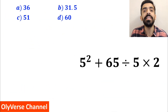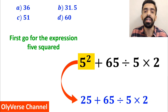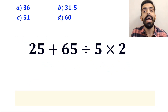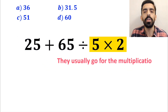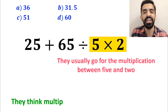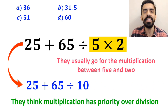Some other people, when solving this question, first simplify 5 squared to get 25 plus 65 divided by 5 times 2. In the next step they go for the multiplication between 5 and 2, because they think multiplication has priority over division. So they rewrite this expression as 25 plus 65 divided by 10.